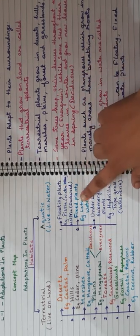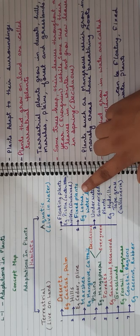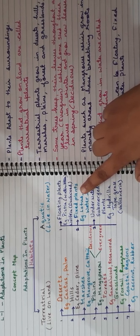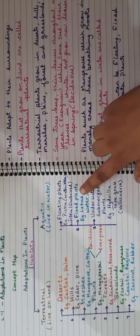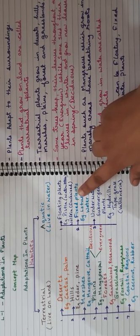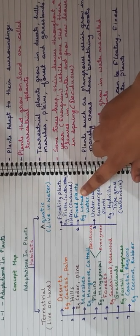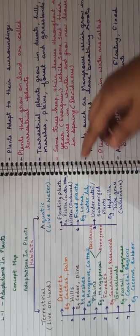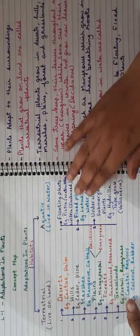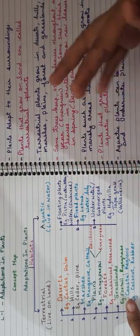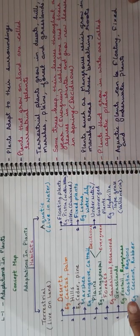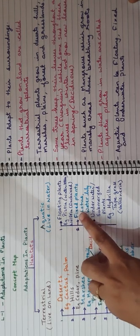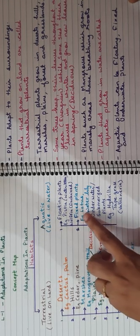Then fixed plants. Fixed plants have roots which are deep inside the soil, and their outer parts are also visible above the water. Examples are water lily and lotus.